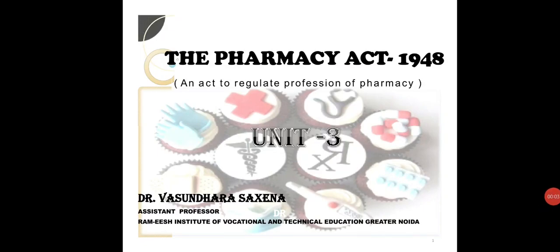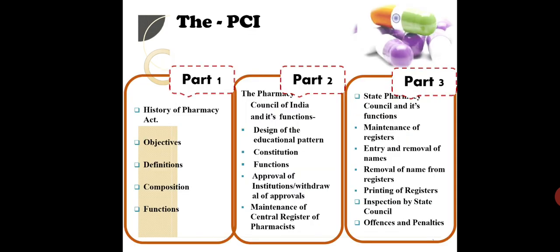Hello students. In Part 3 of the Pharmacy Act 1948, we will be discussing the state pharmacy council — its functions, which include maintenance of registers, entry and removal of names, removal of names from the register, and printing of the register. These are the functions of the state pharmacy council that we will deal with one by one. The most important topics are inspection by the state council and offences and penalties.